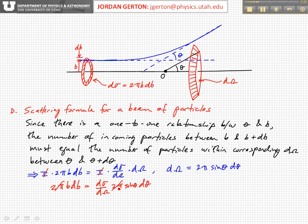The differential cross-section is equal to b over sin θ times db/dθ.